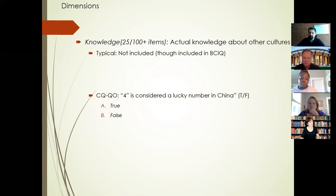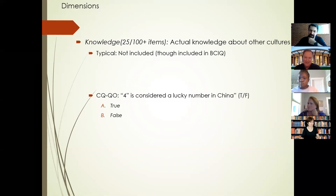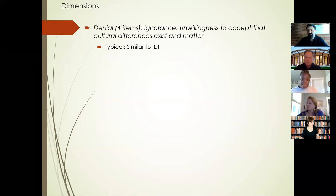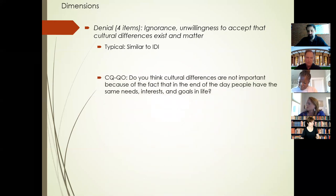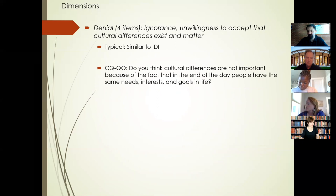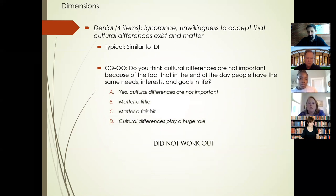For knowledge, there's a catalog of true-or-false questions — for example, 'four is considered an unlucky number in China — true or false?' It's true: the word for four sounds like the word for death, so four is very unlucky, similar to 13 in the United States but even more serious. I also tried a 'denial' or cultural awareness dimension, but it didn't fit well with the rest of the instrument — perhaps because it's fundamentally attitudinal unlike the other dimensions — so I eventually dropped it.